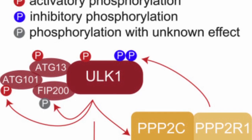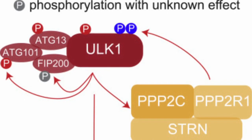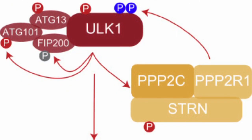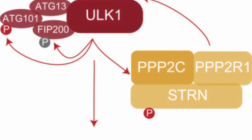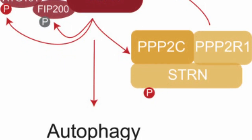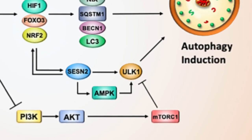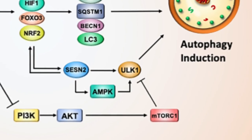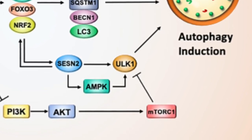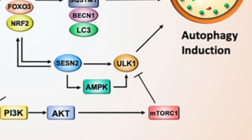The UNC-51 like kinase-1, or ULK-1, complex includes ULK-1, FIP-200 and ATG-13, and these play a key role in autophagy initiation. The mTOR complex, which we have discussed earlier, is a negative regulator of autophagy, and when mTOR activity is inhibited, autophagy initiation is promoted.